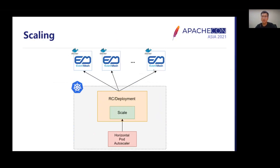This slide is about the scaling of EventMesh. Benefiting from CloudNative elasticity, EventMesh has the ability of horizontal autoscaling.